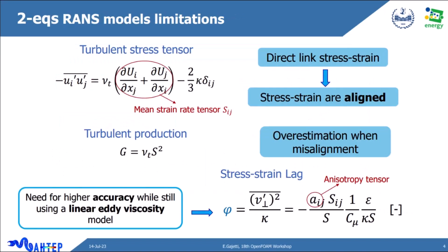One of the limitations of two-equation RANS models is the direct link between Reynolds stresses and the mean strain rate, because there is a direct proportionality between the two tensors. This results in the two tensors being aligned in the model, which is not really the case in all turbulent problems, leading to a number of mispredictions of turbulent production when there is misalignment. One way to overcome this is to introduce a new variable to account for this lag between stress and strain — defined as the square root of the normal-wall velocity fluctuations divided by the kinetic energy — called the stress-strain lag.